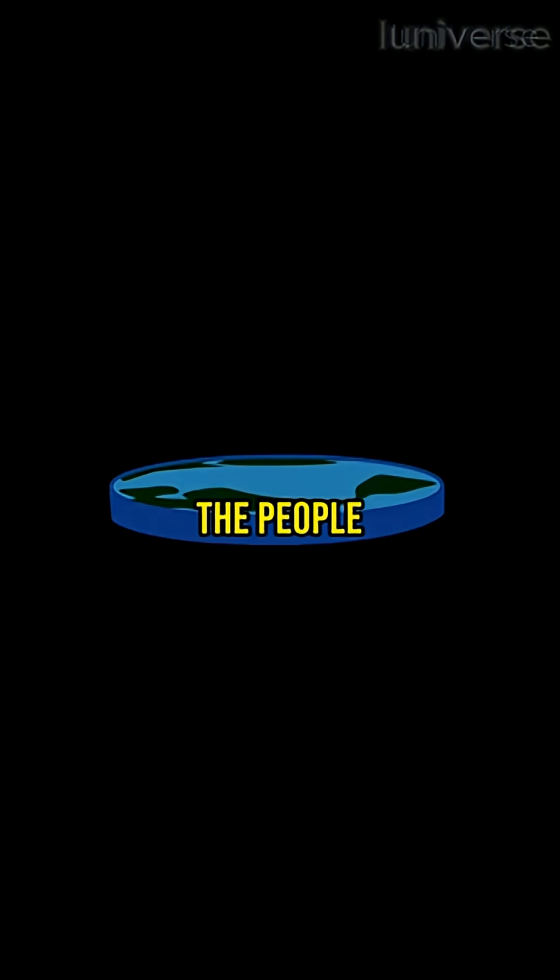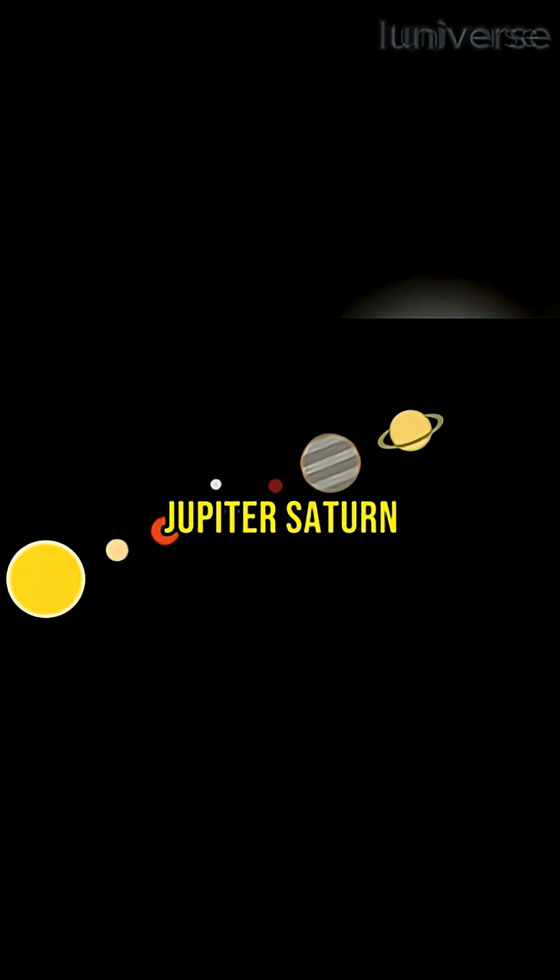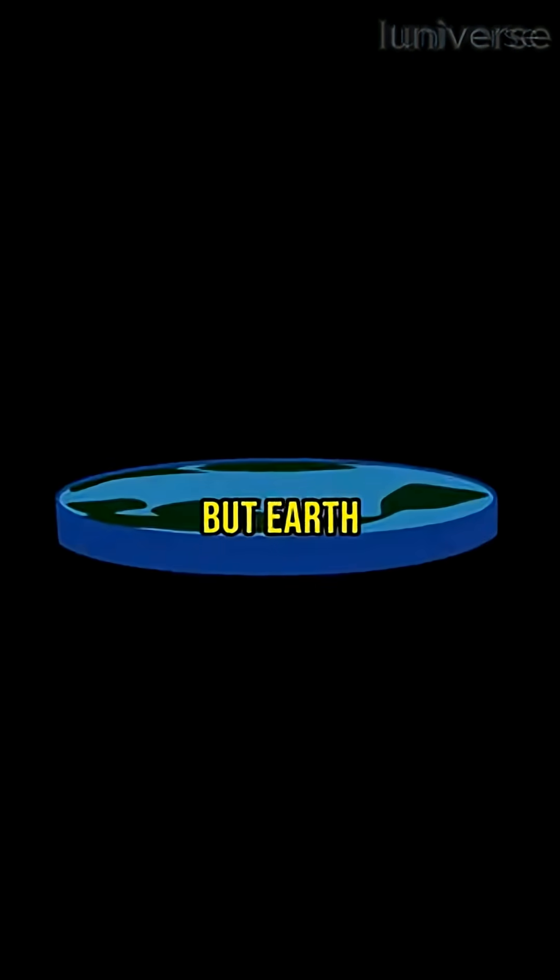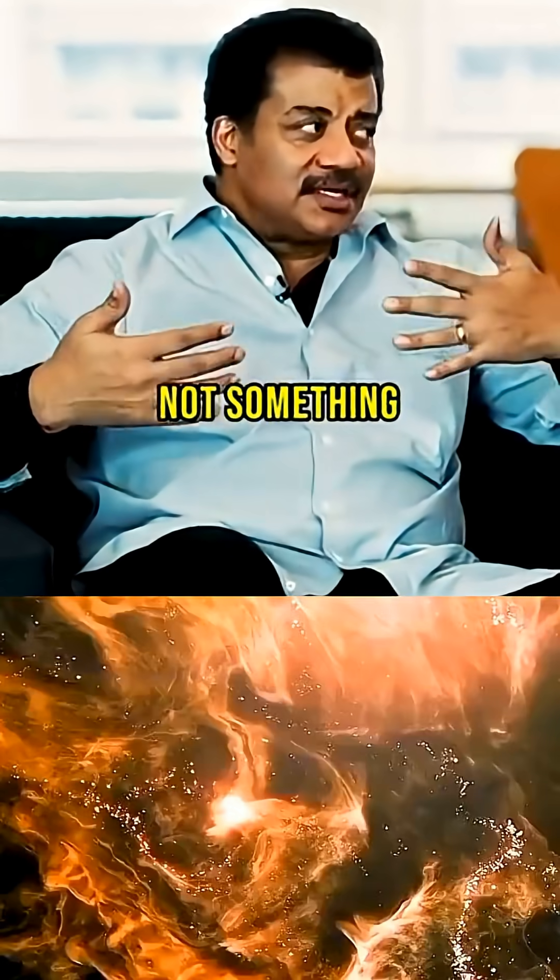The people who think Earth is flat recognize that the Moon is round, Mercury, Venus, Mars, Jupiter, Saturn, Uranus, Neptune, and the Sun are all spheres, but Earth is flat? That doesn't square, doesn't jive.